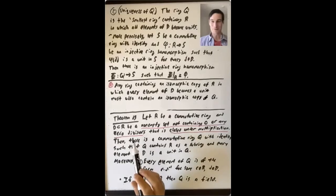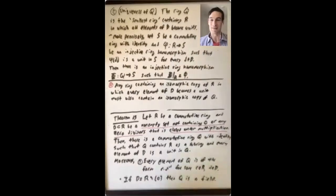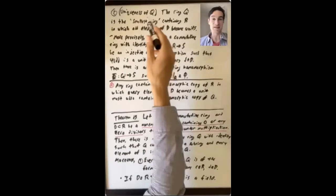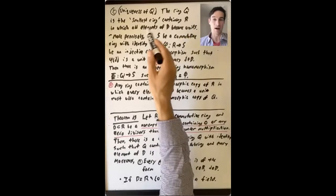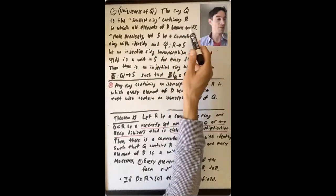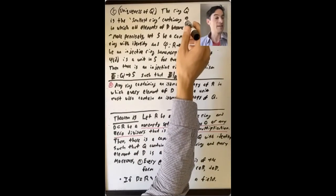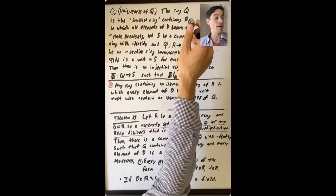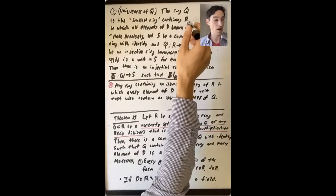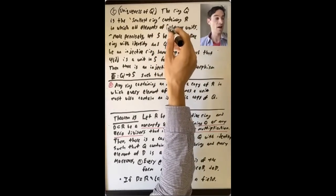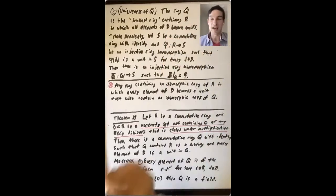Let's now give the last part of this big theorem — the uniqueness statement for Q. It says that the ring Q is the smallest ring containing R in which all elements of D become units. Q contains a subring isomorphic to R, and inside this subring every element of D is now a unit in Q.